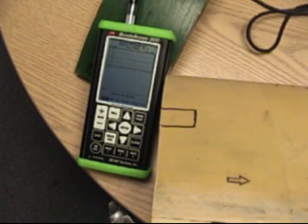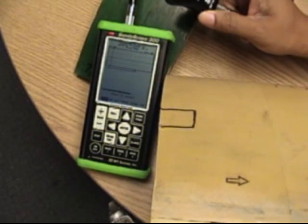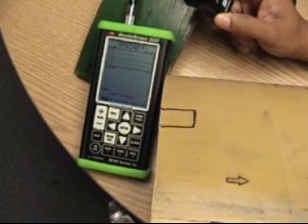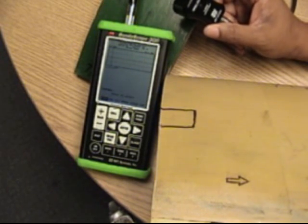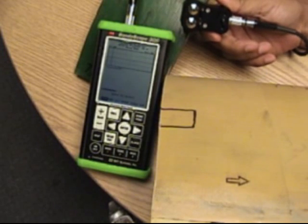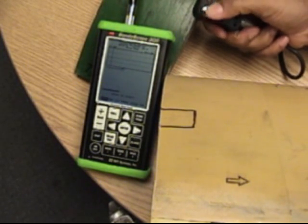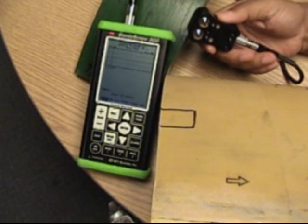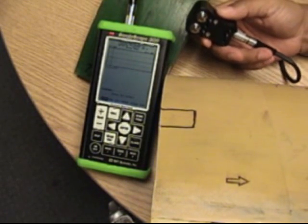So what I'm going to do basically is show you using the Bondoscope 300 in the pitch catch mode with our low frequency probe. You notice it's a probe that has two spring loaded pitch send receive ends on them that will be placing on the part.